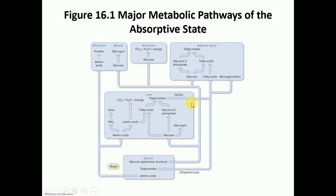The boxes on top represent all of your tissues versus your muscle — what we use to provide ATP would be glucose. The box up here represents your adipose tissue. The big box in the middle represents the liver — think of the liver as your kitchen, taking all the nutrients from the digestive system and using it to cook up different things. The box down here is your digestive system — your small intestine after digestion, where absorption begins.